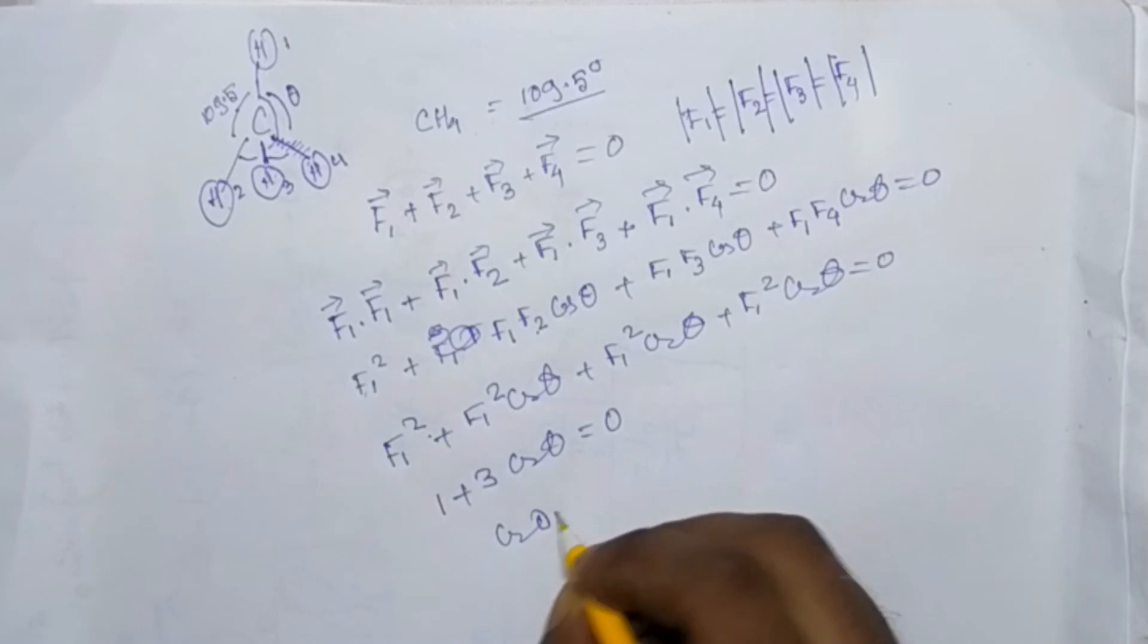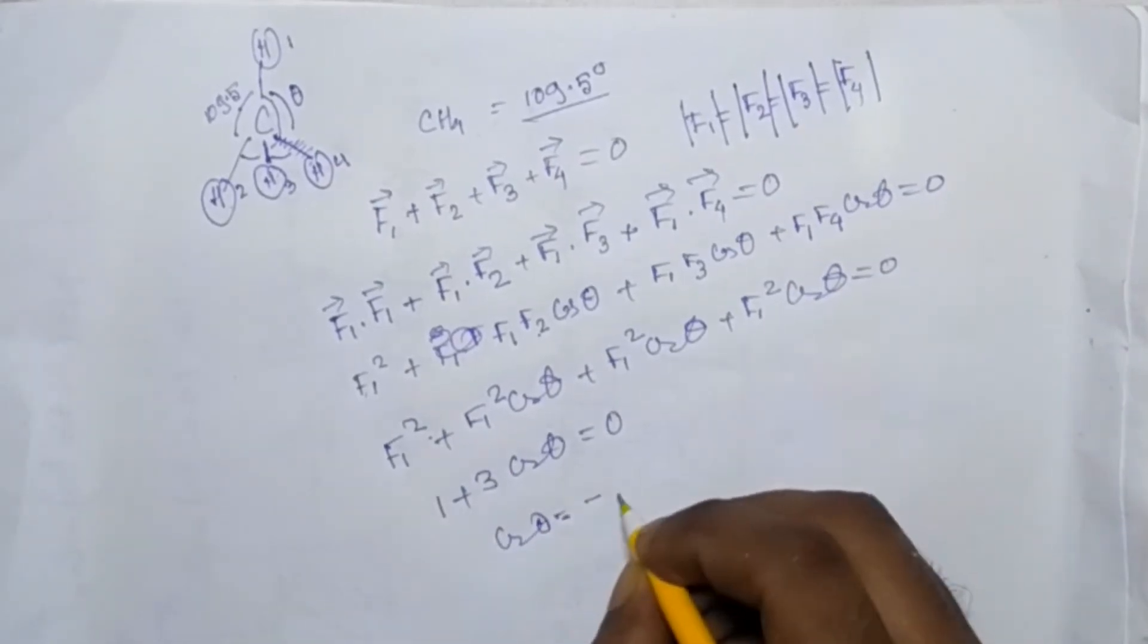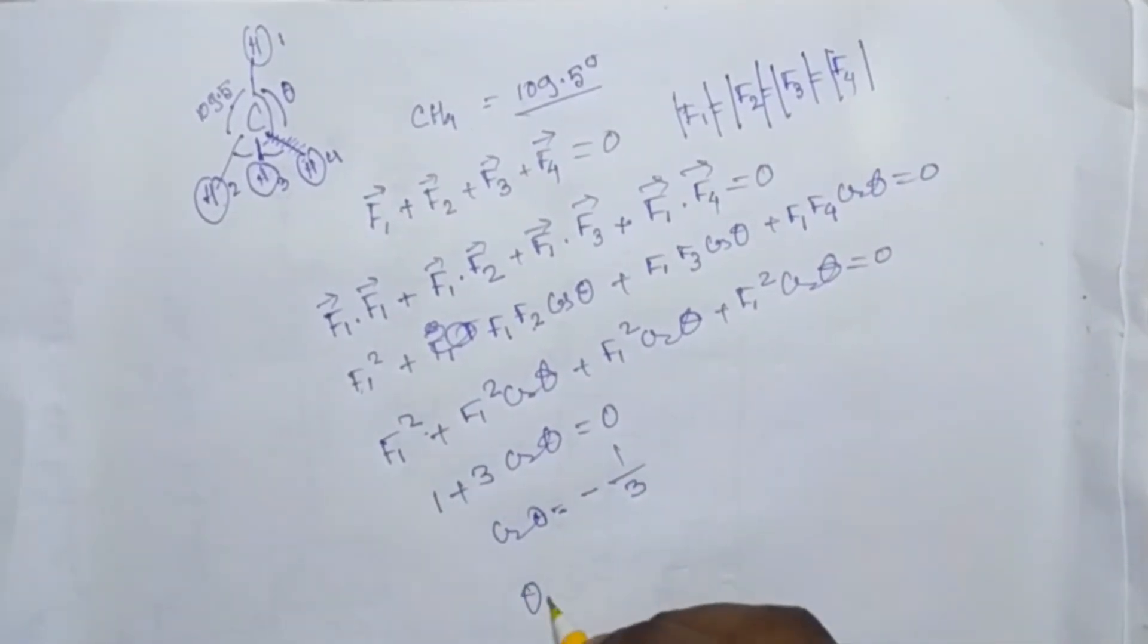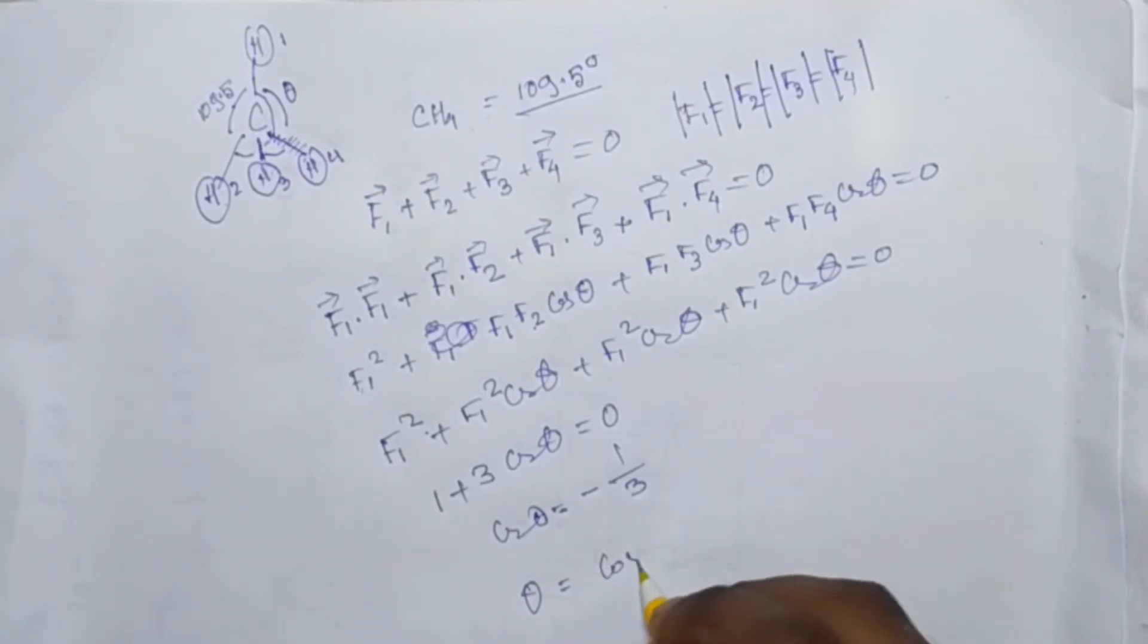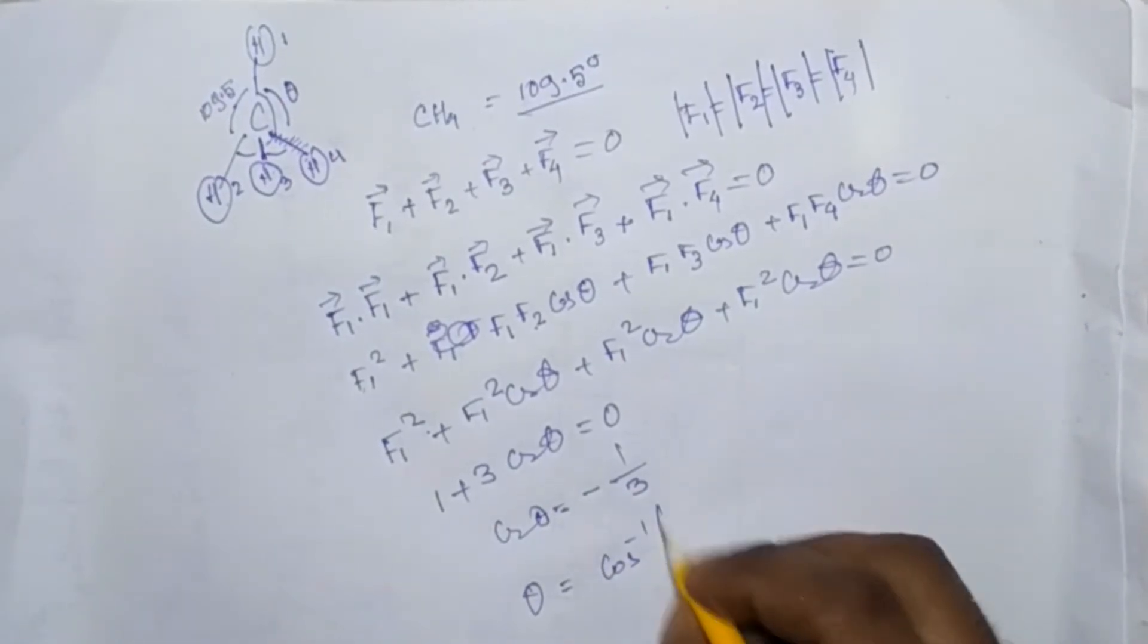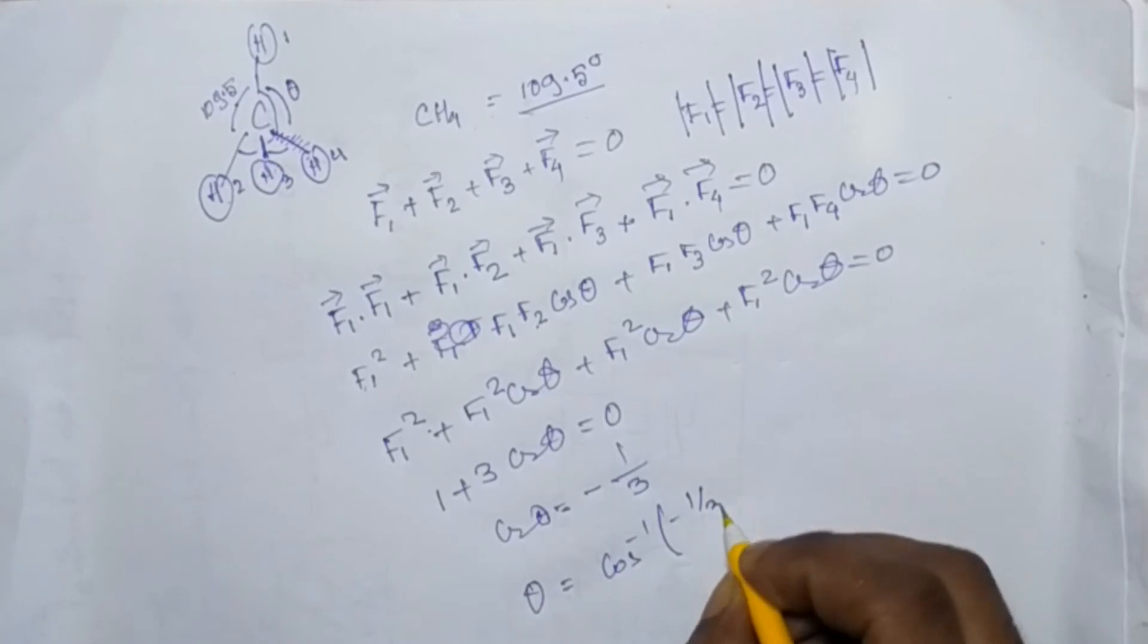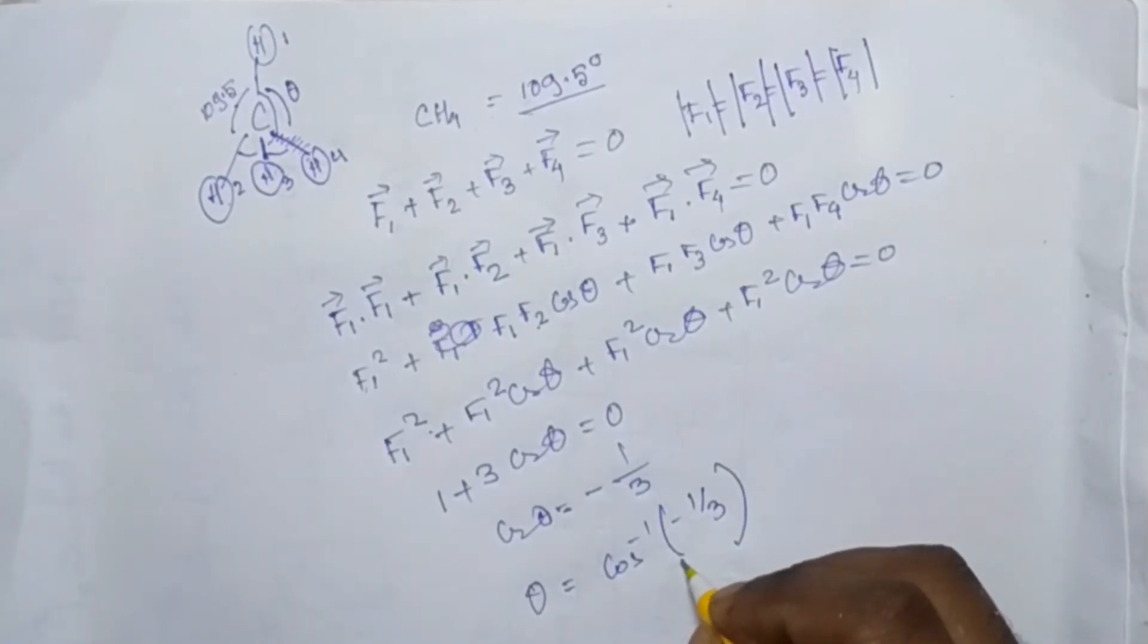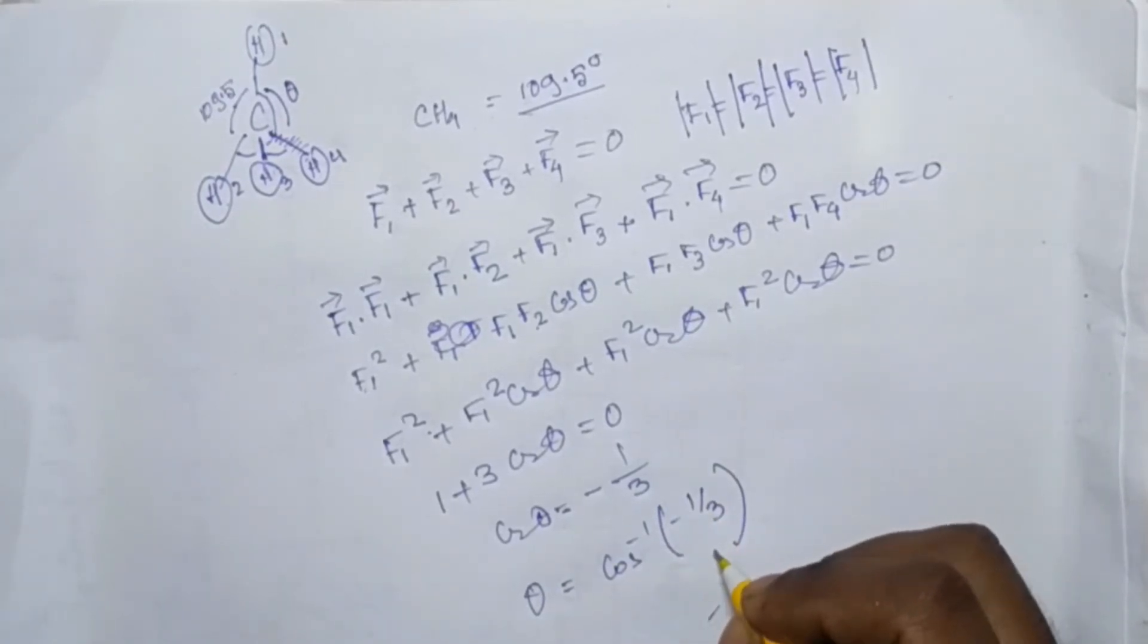So cos theta equal to minus 1 by 3. So theta equal to cos inverse of minus 1 by 3. Now the value of this cos inverse minus 1 by 3 is the answer.